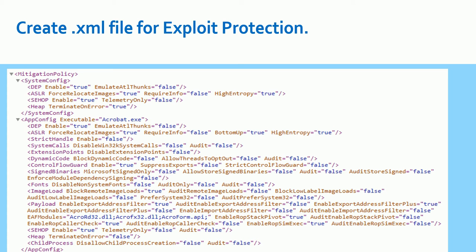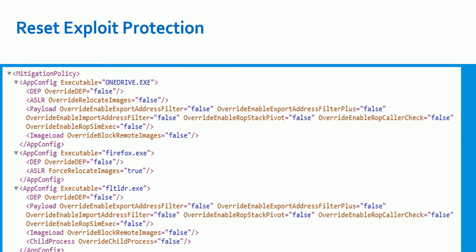Here is an example of how to create the XML file. It starts with MitigationPolicy and SystemConfig. In this scenario I'm using acrobat.exe as the application enabled for exploit protection. Settings include DEP enabled, ASLR true, EmulateAtlThunks, and BottomUp. All these settings must be defined properly inside the XML file.